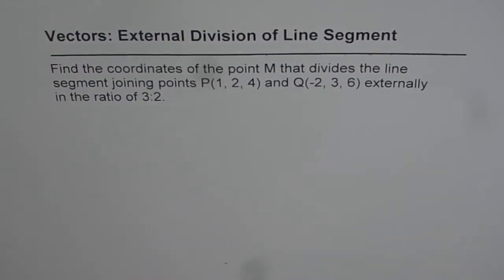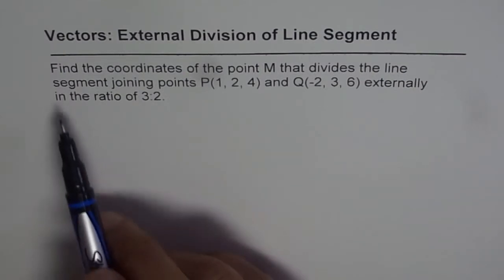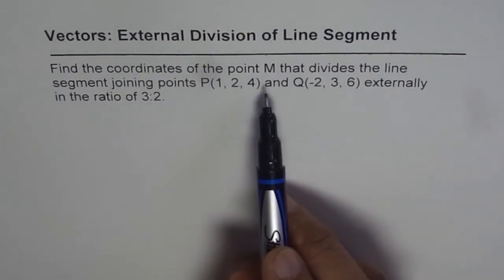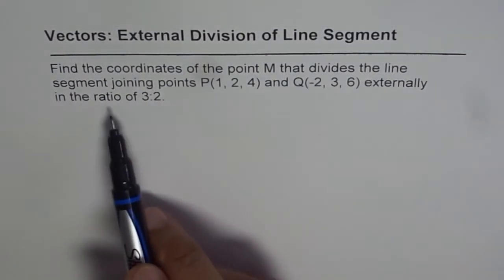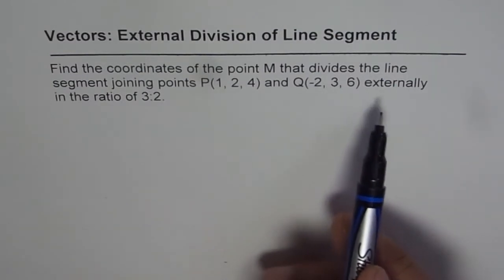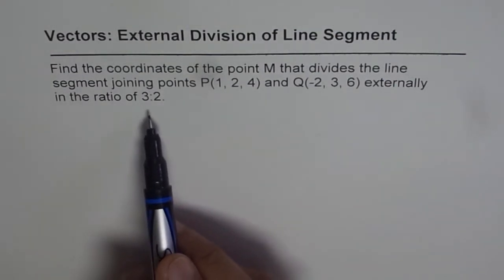Here is an application of external division of line segment. The question is: find the coordinates of the point M that divides the line segment joining P and Q externally in the ratio of 3 to 2.